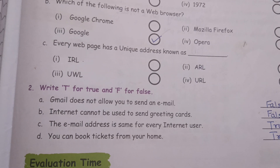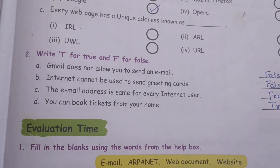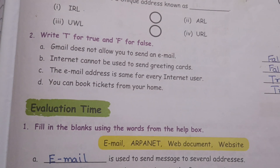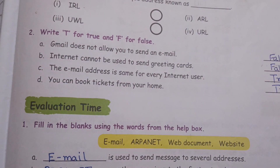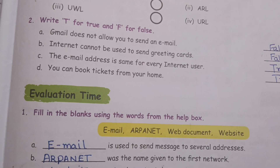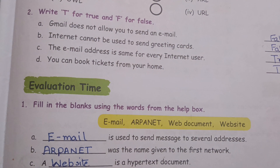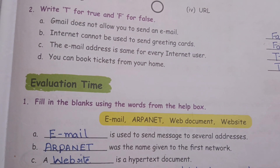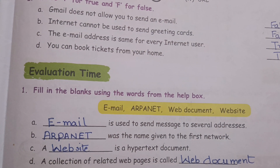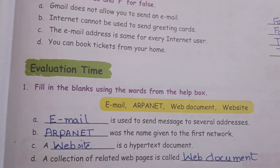Now fill in the blanks where the words are given in the help box. Email is used to send messages to several addresses. ARPANET was the name given to the first network. A website is a hypertext document. A collection of related web pages is called a web document.